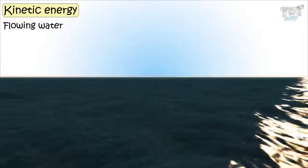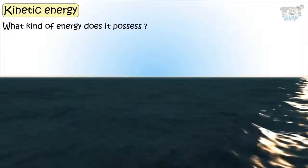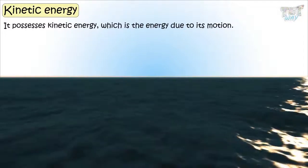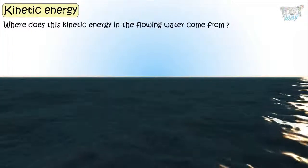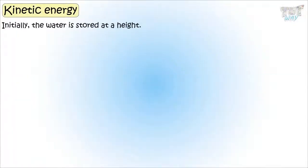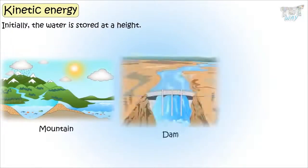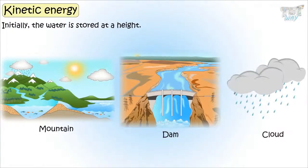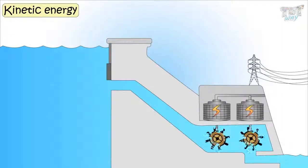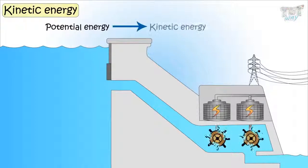Flowing water — what kind of energy does it possess? It possesses kinetic energy, which is the energy due to its motion. Where does this kinetic energy in the flowing water come from? Initially, the water is stored at height — it could be on mountains, in dams, or in the clouds. Due to its position, it possesses potential energy. And when it is released from that position, its potential energy is converted to kinetic energy and gives motion to the water.